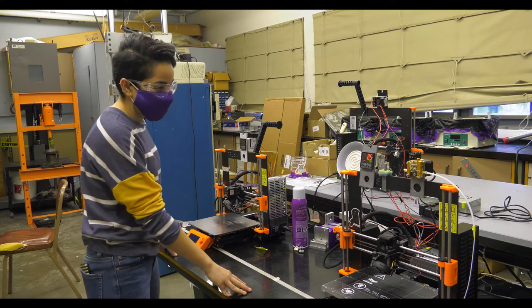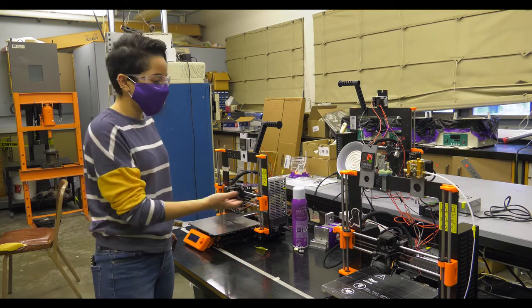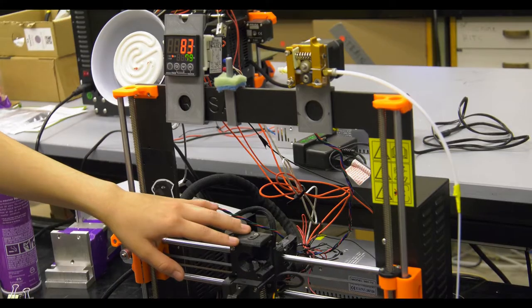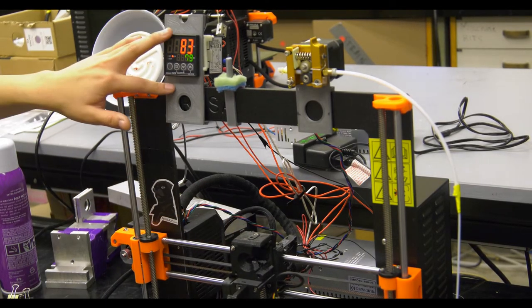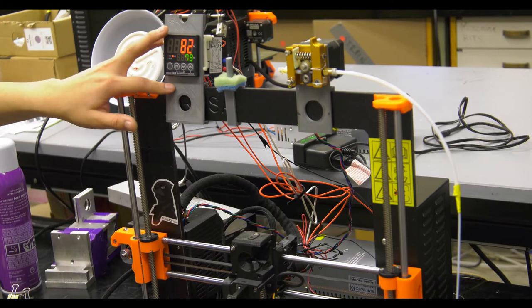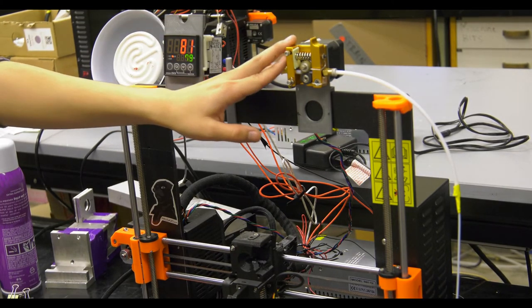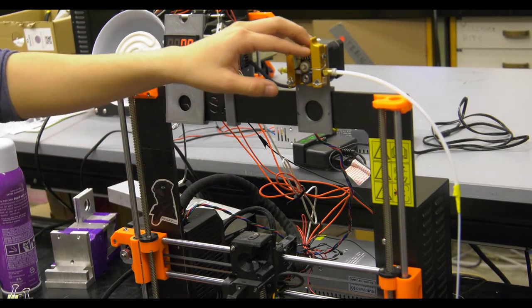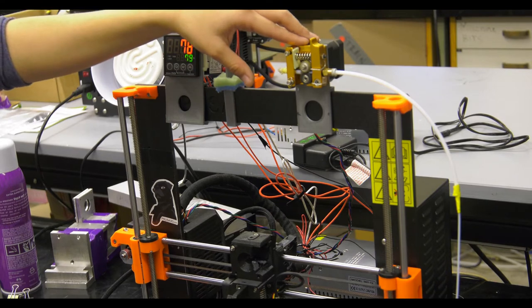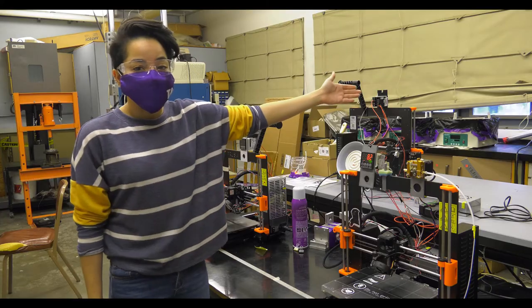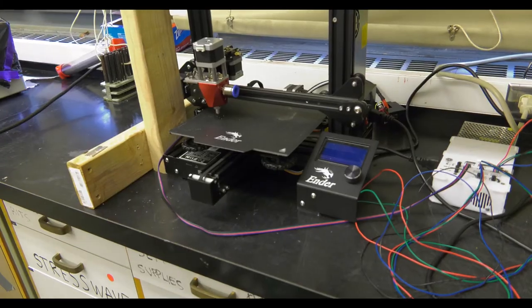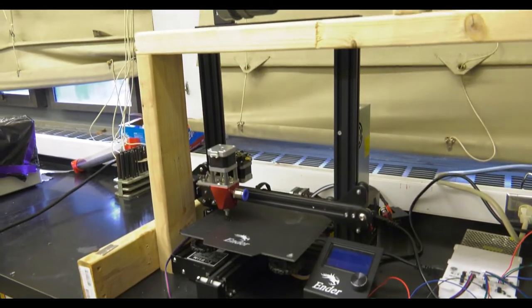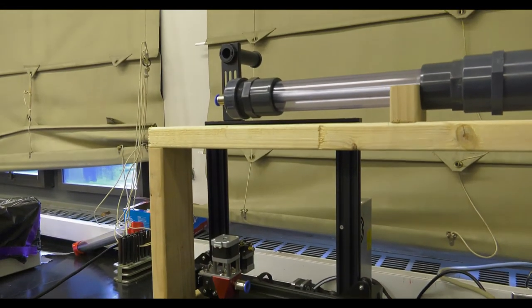Here on this table, we have our polymer and composite 3D printers. We've made modifications, adding a new temperature controller so we can go up to 400 degrees Celsius. In addition, we took this extrusion motor, which was in the nozzle head, and we moved it up here so we can better control the deposition of composite filaments. We also have our ceramic printer as well. So we can now print composites, ceramics, and pure polymers.